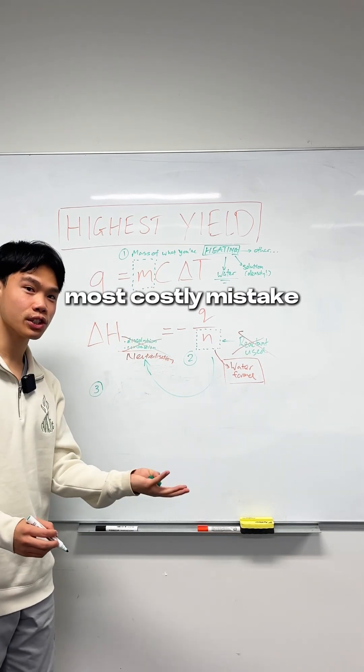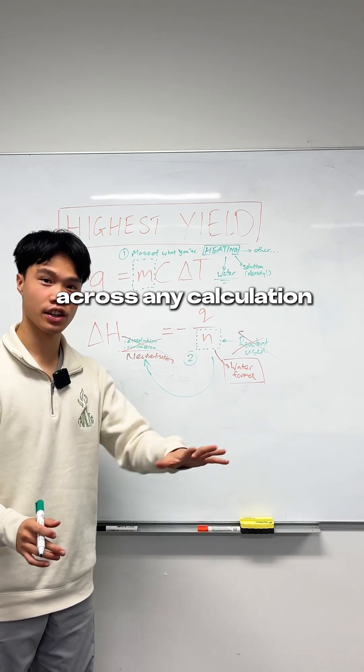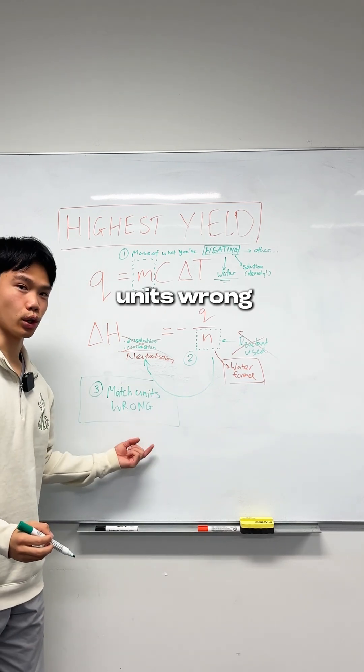Finally, the third and most costly mistake that can actually happen across any calculation where there's a constant is that you match your units wrong.